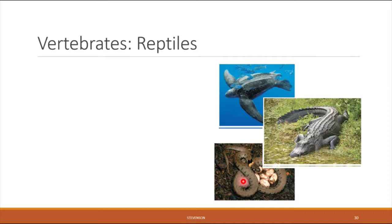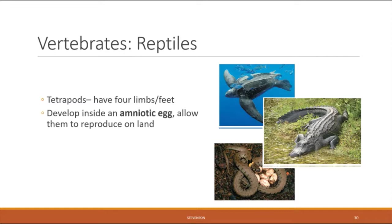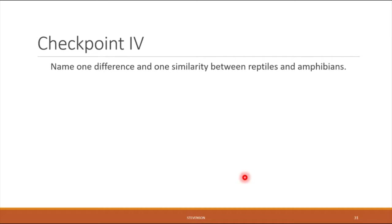Next up are the reptiles, also tetrapods with four limbs. Reptiles differ from amphibians because they develop inside an amniotic egg — one that does not require a watery environment — allowing them to reproduce on land. Examples include turtles, crocodiles, lizards, snakes, and — believe it or not — birds, which are usually included in this category because they evolved from a common ancestor. In this checkpoint, identify one difference and one similarity between reptiles and amphibians.